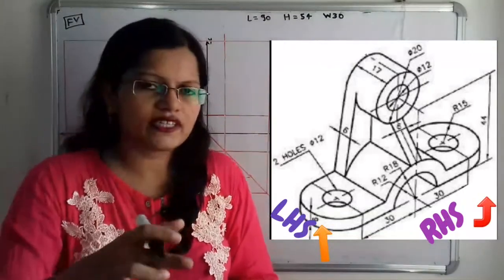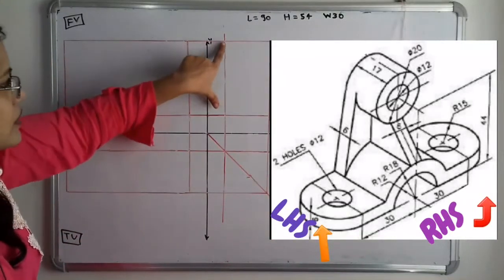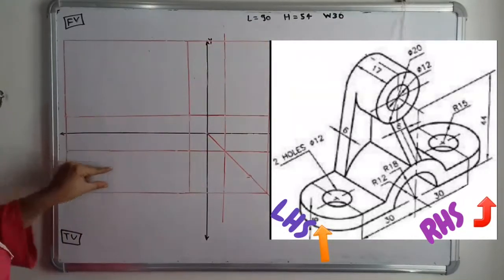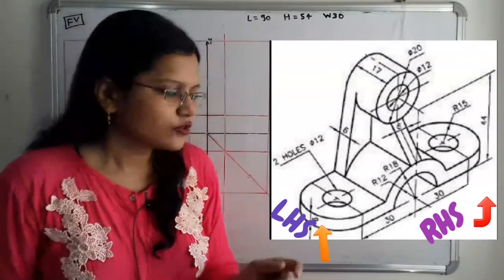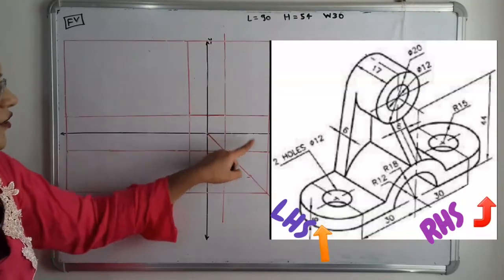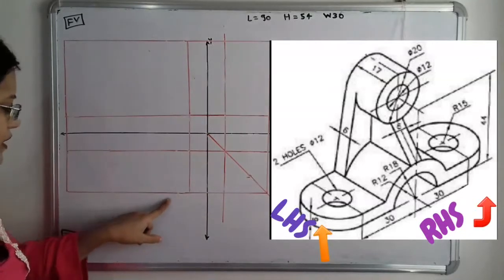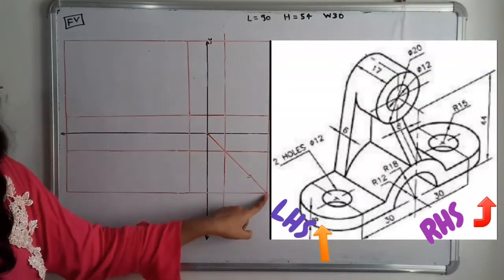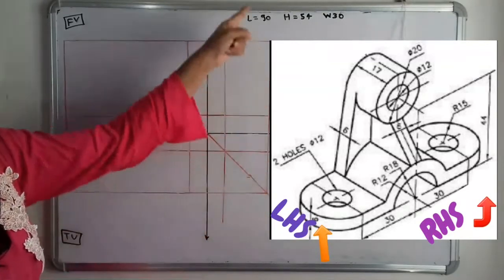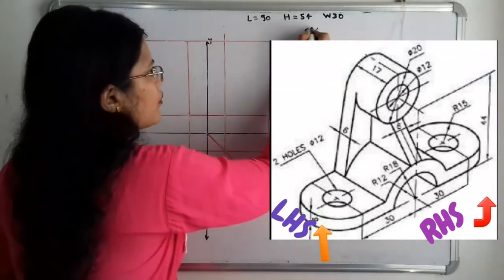When we observe the object from the side, we can clearly see the total width and total height. The height is aligned from the front view to the side view. To project the width from the top view to the side view, we draw a line in the fourth quadrant splitting it into two equal parts at 45 degrees. We project lines up to that 45-degree line, find the point of intersection, and draw a vertical line for the side view. This gives us the outline of the side view.